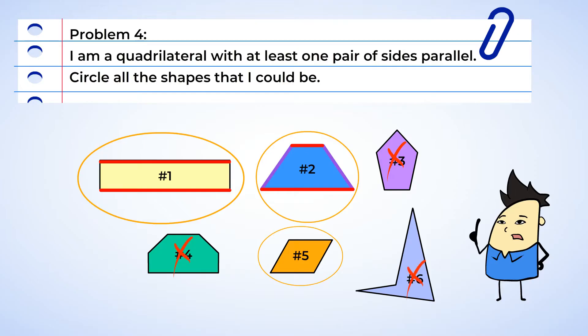And this means from all these shapes, the answer could be a rectangle, trapezoid, or rhombus. We solved the riddle. From all these shapes, you could be a rectangle, trapezoid, or rhombus. Great work.